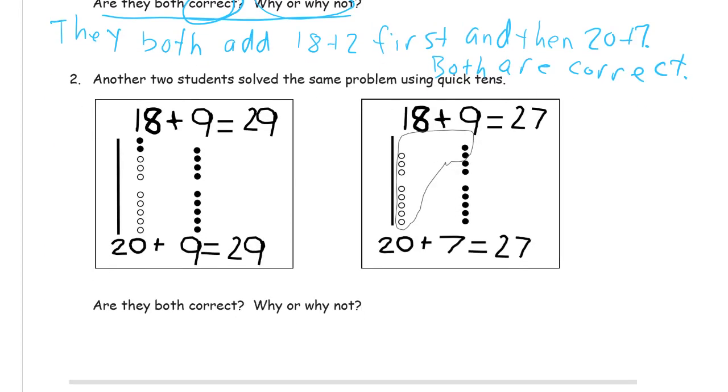Another two students solved the same problem using quick tens. Are they both correct, why or why not? We have 18 plus 9 and we have two different totals here. Since we figured out that 27 is the correct answer, this one here is probably going to be wrong.